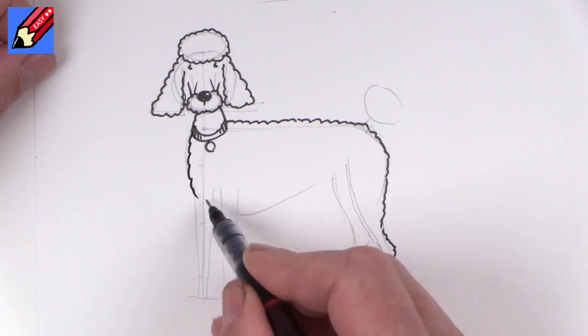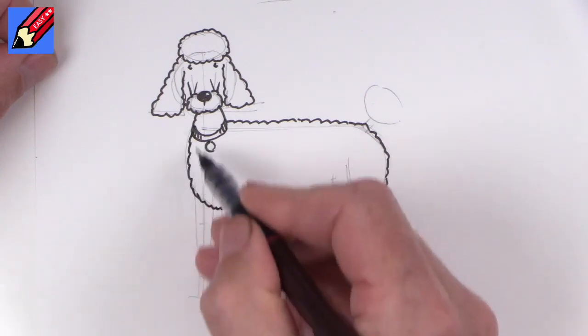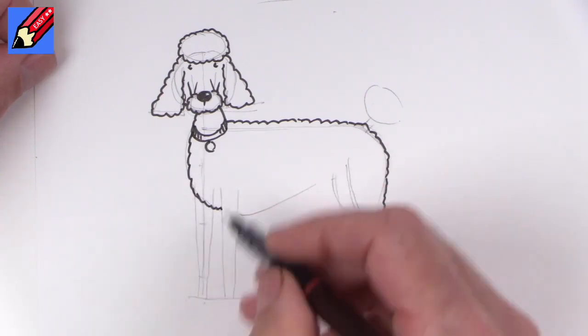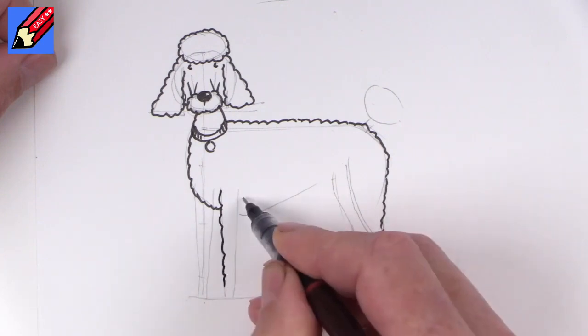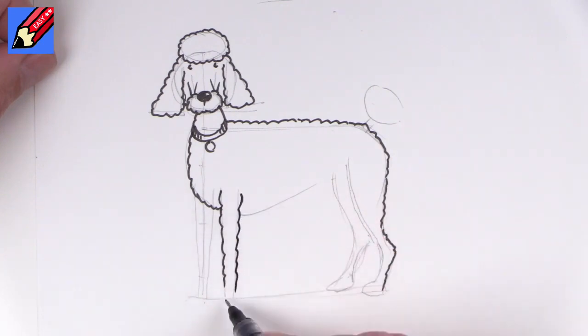And let's do a similar thing here. But that's going to come in front of this paw there. And we'll draw this paw coming straight down.